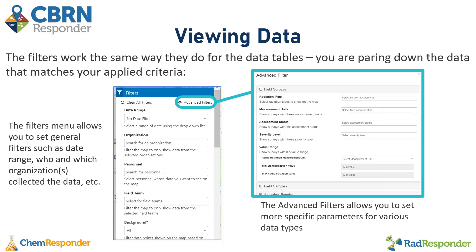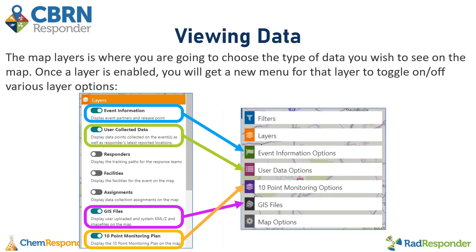If I click Advanced Filters, this will allow me to set more specific parameters for various data types such as the assessment status, severity level, radiation type, and more. The Map Layers section is where you choose the type of data you wish to see on the map. Once a layer is enabled or toggled on, you will get a new menu for that layer to toggle on or off various layer options. I have event information, user collected data, GIS files, and 10-point monitoring plan layers enabled.